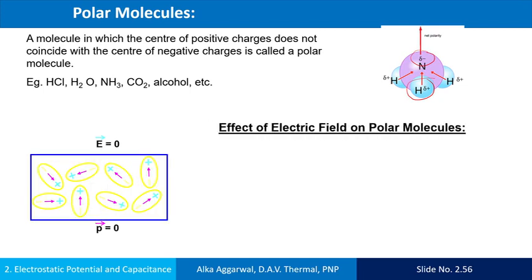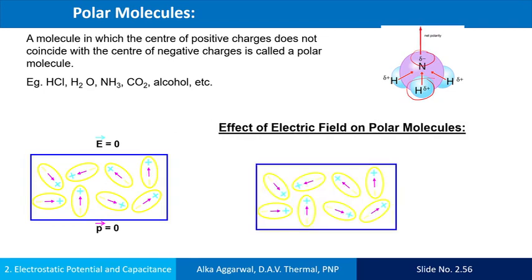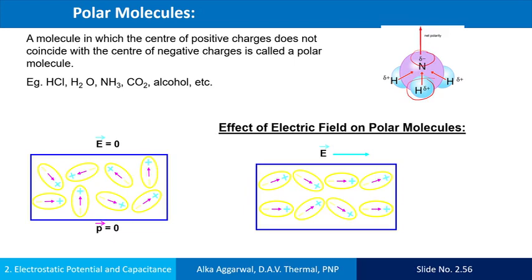Effect of the electric field on polar molecules. In this diagram, the sample is placed in the presence of the electric field. Now the dipoles orient themselves in a regular fashion and hence dipole moment is induced. The complete alignment is not possible due to thermal agitation.